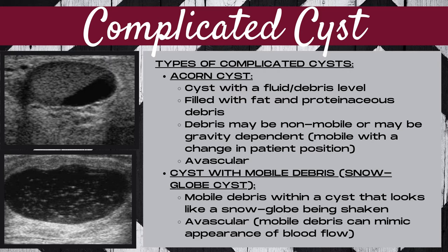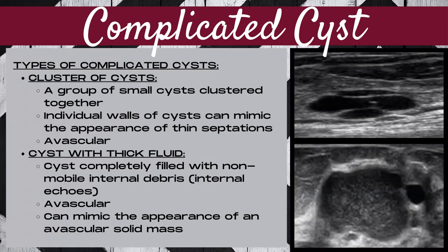The next type of complicated cyst is a cyst with mobile debris, often nicknamed snow globe cysts. The mobile debris within the cyst looks like a snow globe being shaken up, moving on its own almost like it's snowing within the cyst. A cyst with mobile debris should be avascular, although the motion of the debris can mimic the appearance of blood flow when using color or power Doppler.